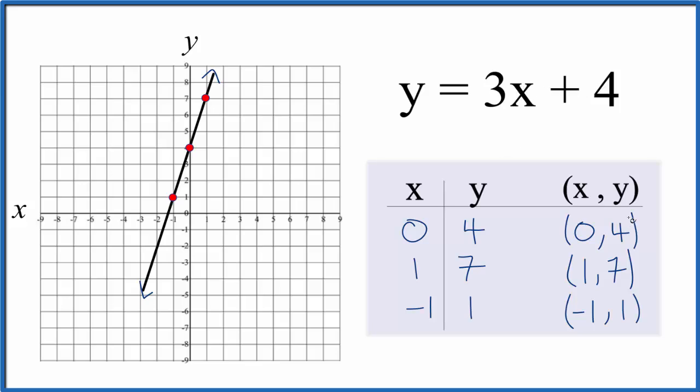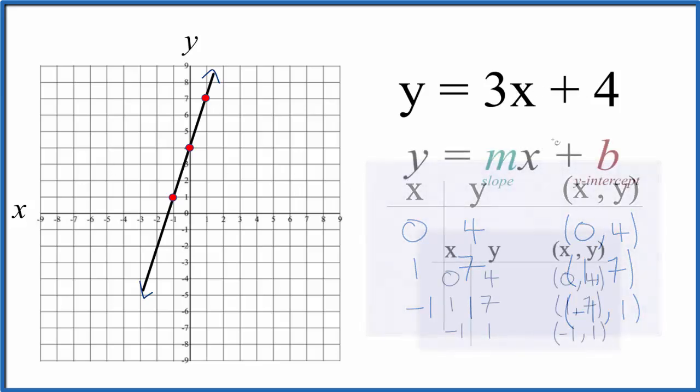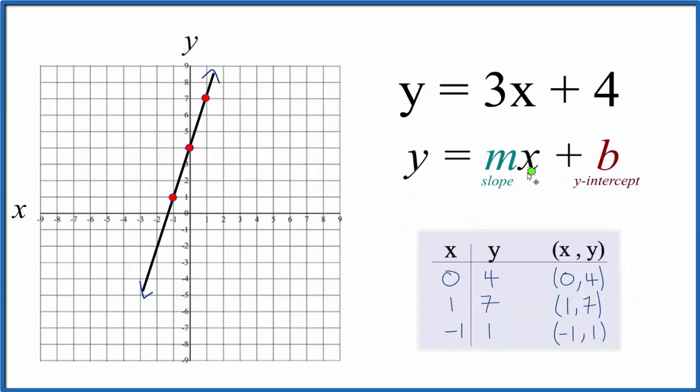Now let's use slope-intercept formula to check our work. So y equals mx plus b. b is the y-intercept. So here's the y-axis. So that's where the line should go through the y-axis. And b is four. So let's find four. One, two, three, four, right there. That's our y-intercept.